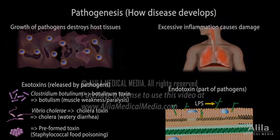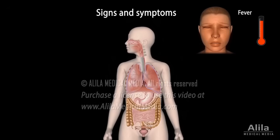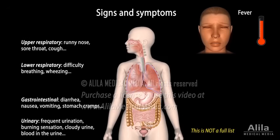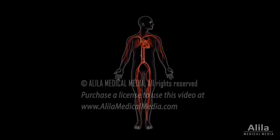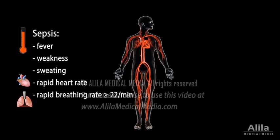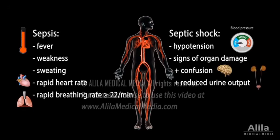Different diseases manifest differently, but the most common sign of infection is fever, which is actually one of the ways the body uses to fight infection. Other symptoms vary depending on the system that is affected. A systemic body-wide infection may lead to sepsis and septic shock, with rapid heart rates, breathing rates, decreased blood pressures, and signs of organ damage.